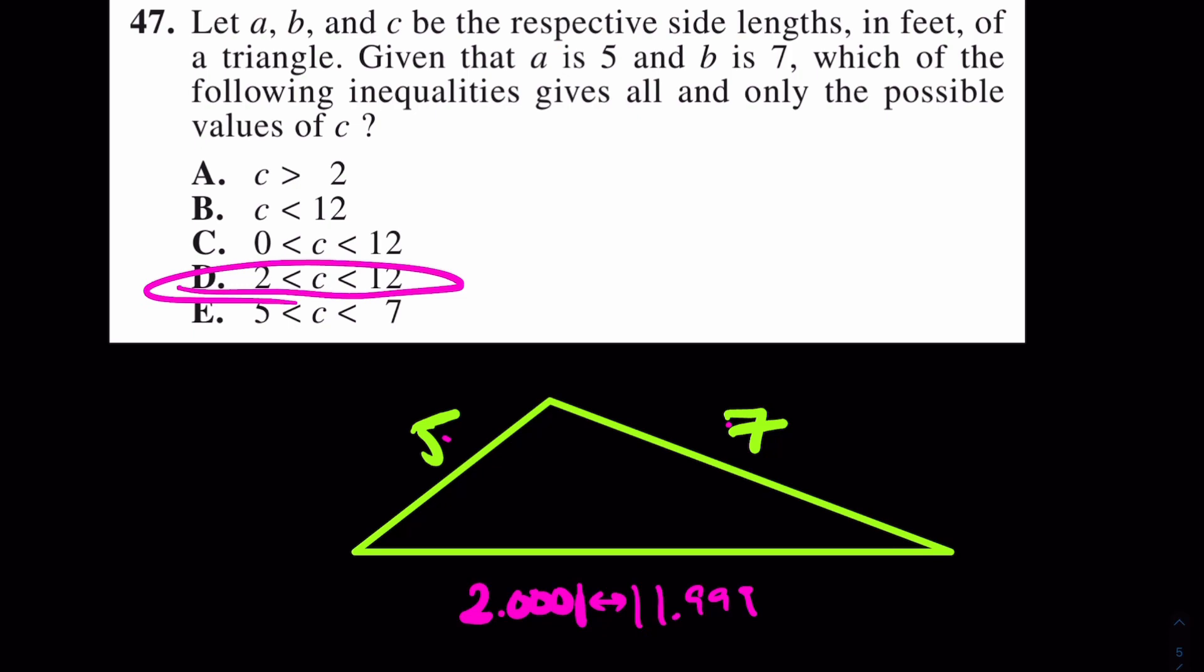So therefore I think the best answer would be D. So what is this saying? This is saying that c could be a little bit bigger than 2, but it must be also smaller than 12. That is the answer for number 47 from this most recent ACT.